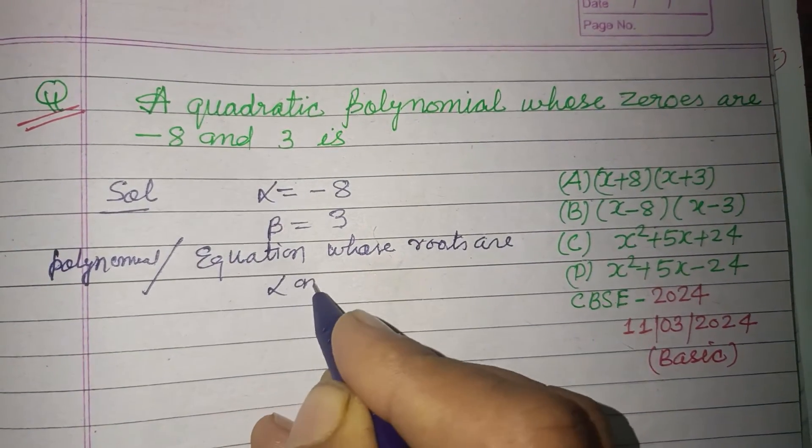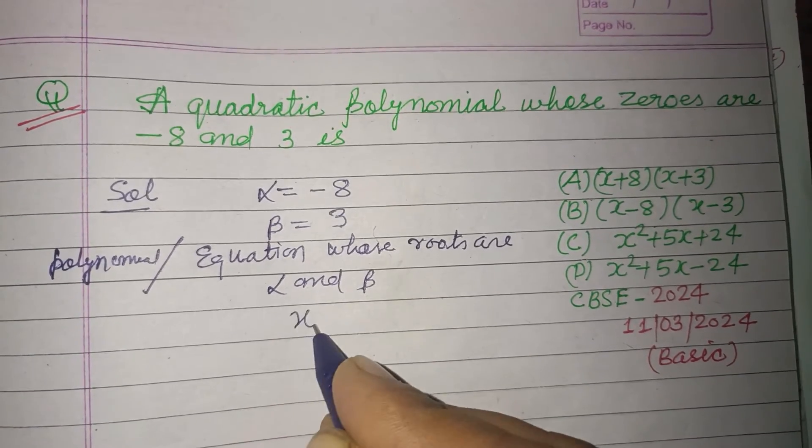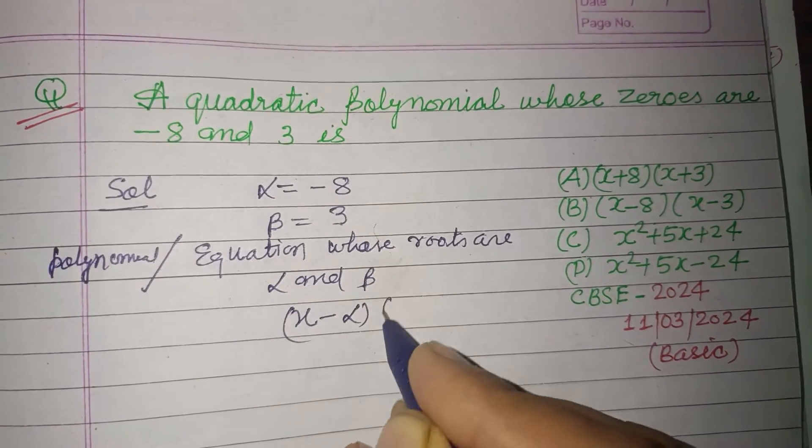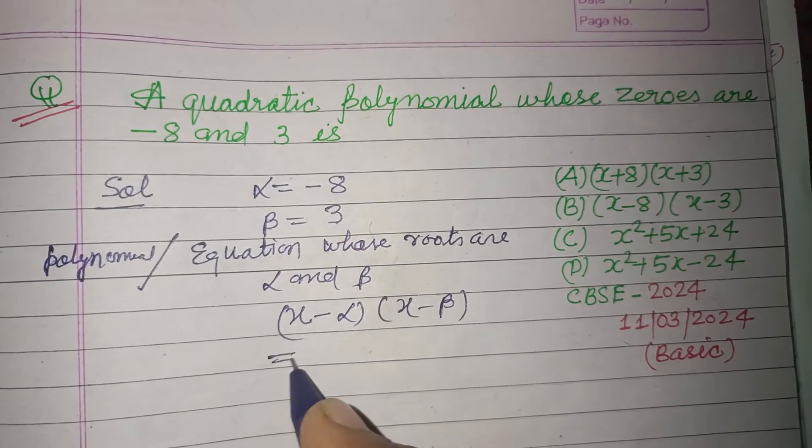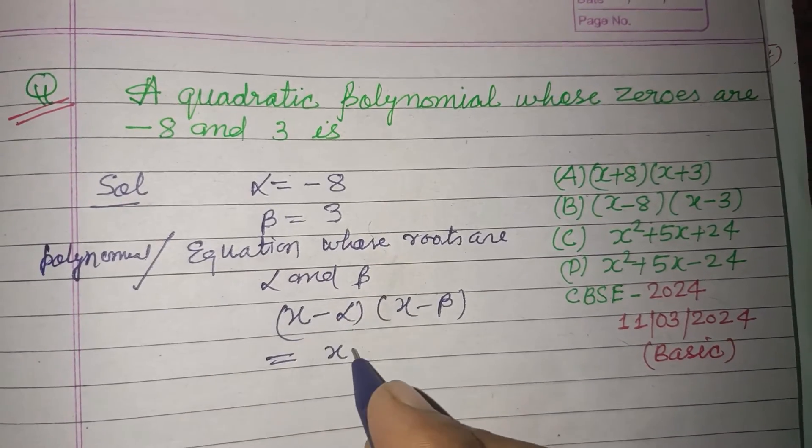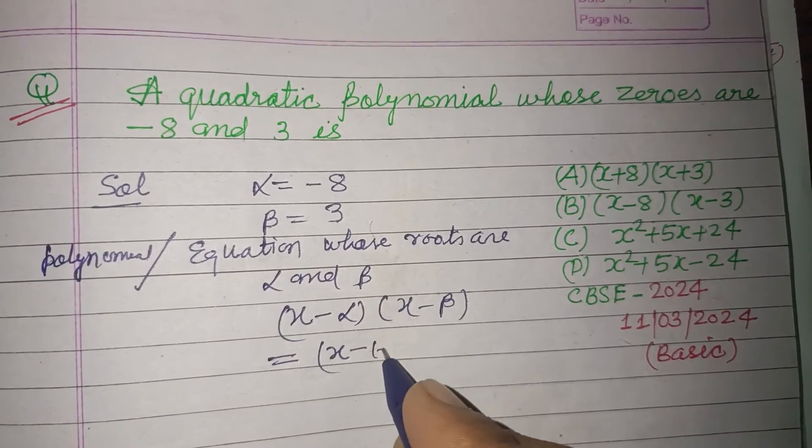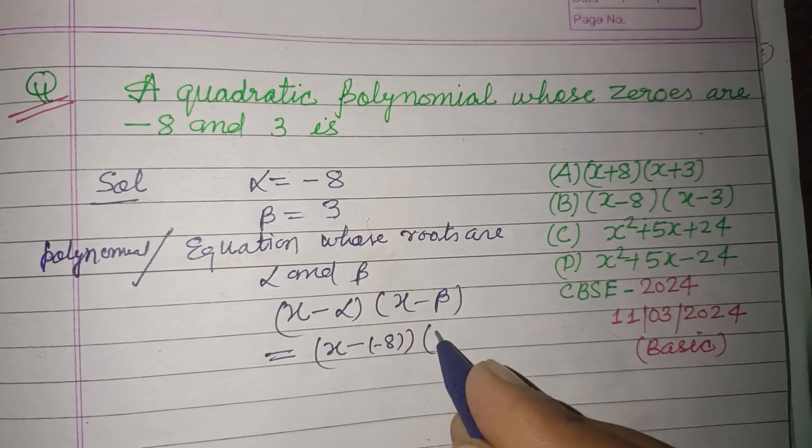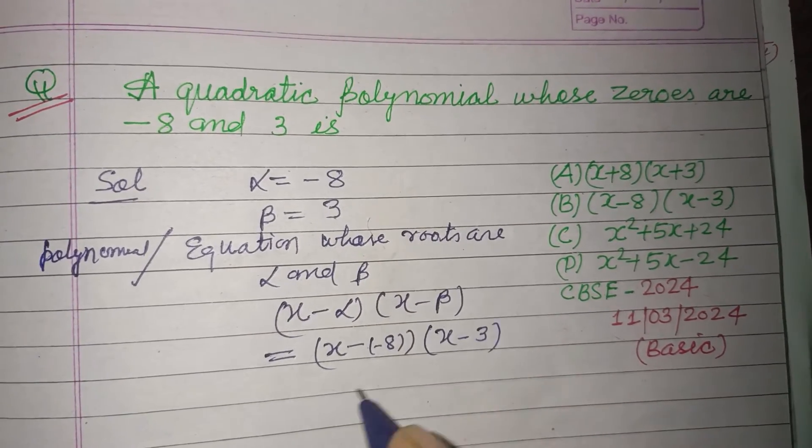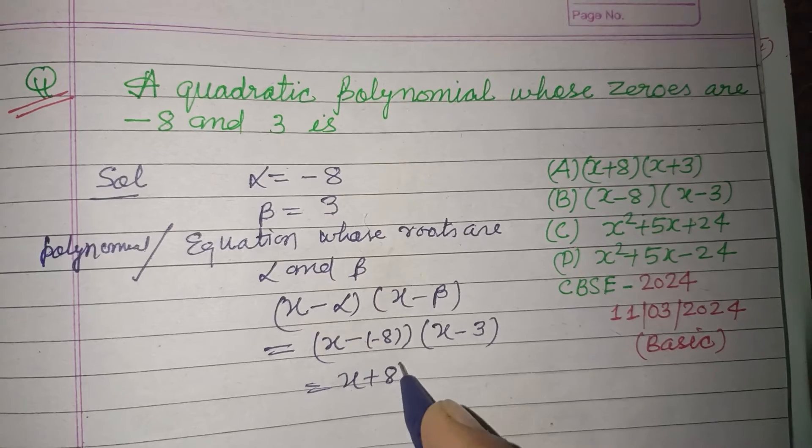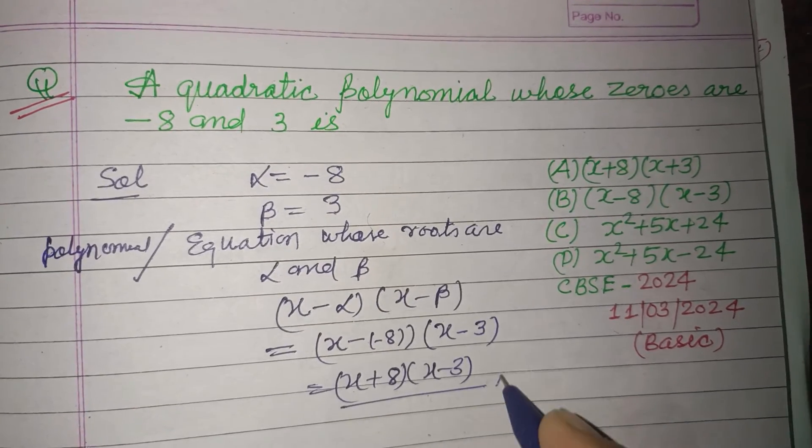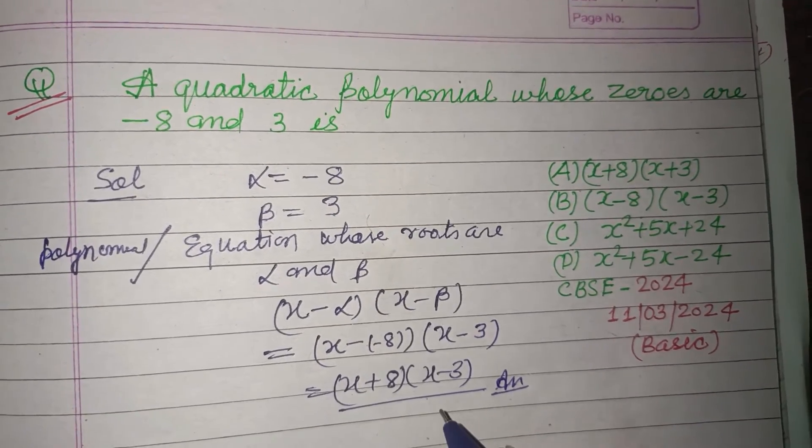The polynomial will be (x - alpha)(x - beta). Putting the values: x minus (-8) times x minus 3, which becomes (x + 8)(x - 3).